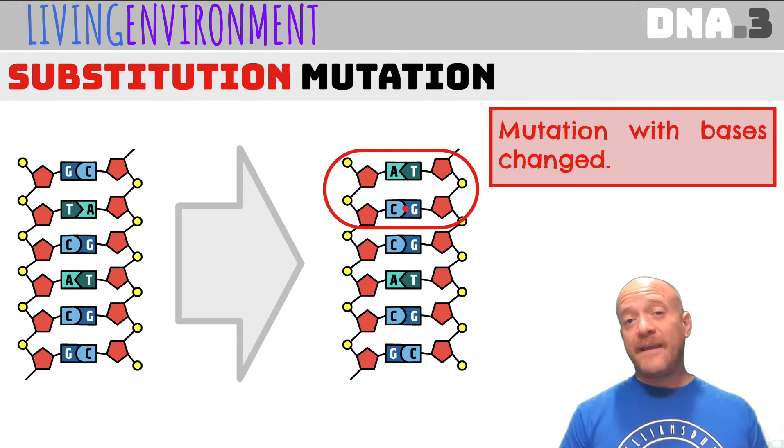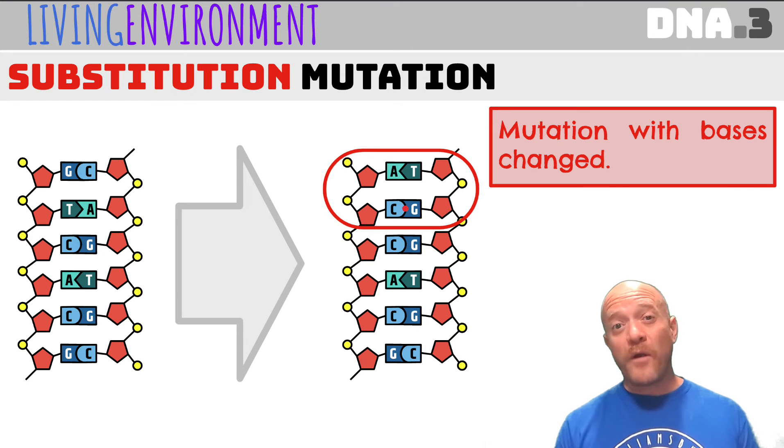So the way that you can calculate it is you can count the bases. An easy way, if they have the same number, chances are it's substitution. If they have a fewer number, it's going to be deletion. And if they have more bases, it's going to be insertion.